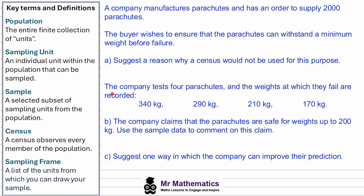For part B, the company tests four parachutes and the weights at which they fail are recorded. The company claims that the parachutes are safe for weights up to 200 kilograms. We need to use this sample data to comment on the claim.